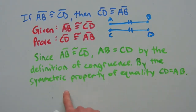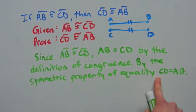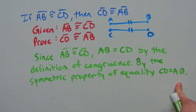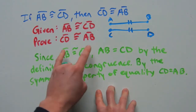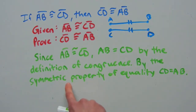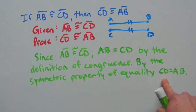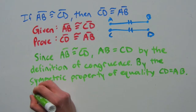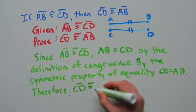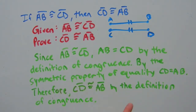By the symmetric property of equality, which deals with real numbers, we have that if AB equals CD, then CD equals AB. And remember, when you're proving a statement, you can't use the end result as one of your steps — that has to be your final and last step. But we can use the symmetric property of equality because that is a postulate in algebra. So since this is already a true statement, we can use that. So now that we have CD is equal to AB, therefore...